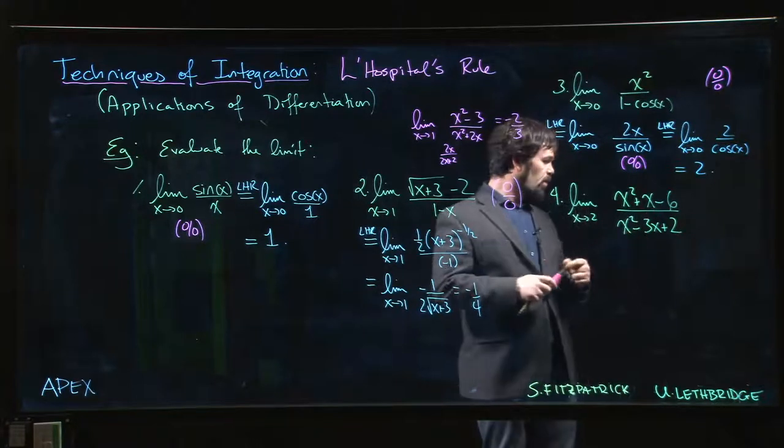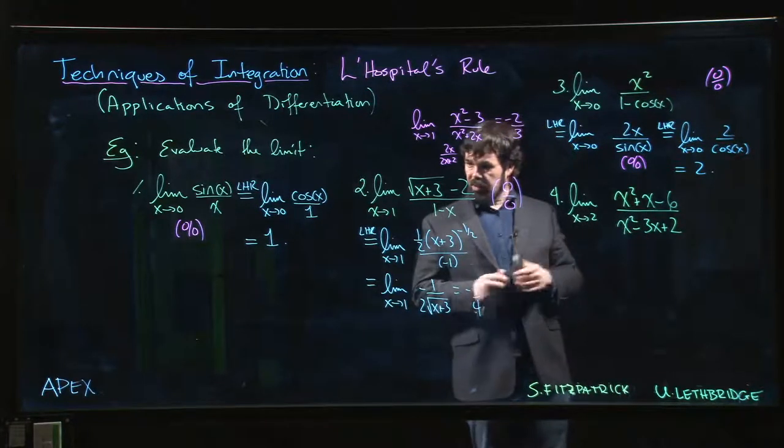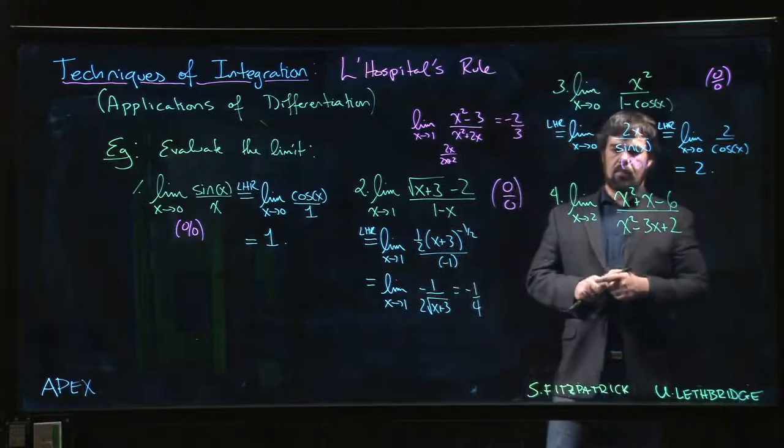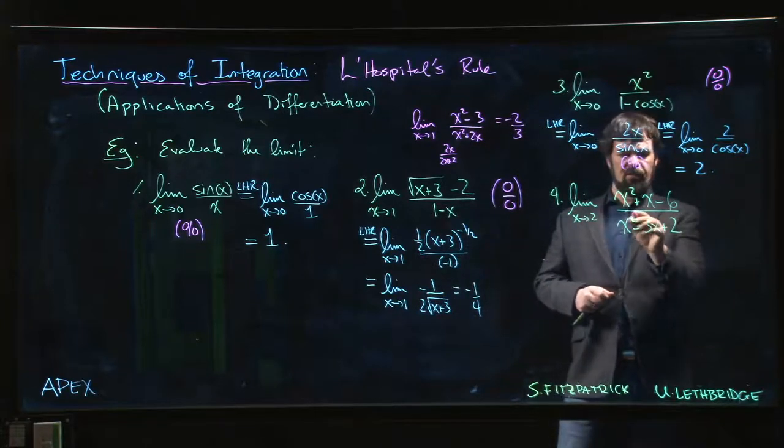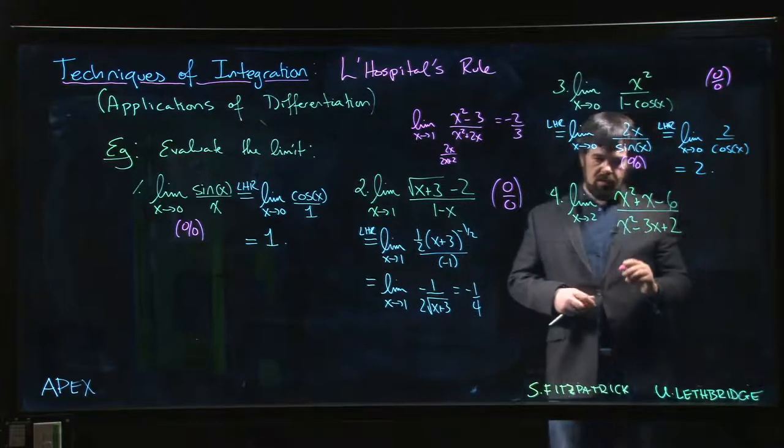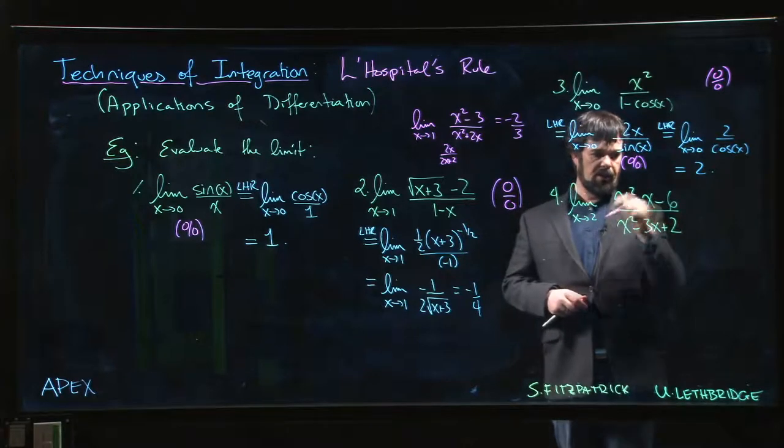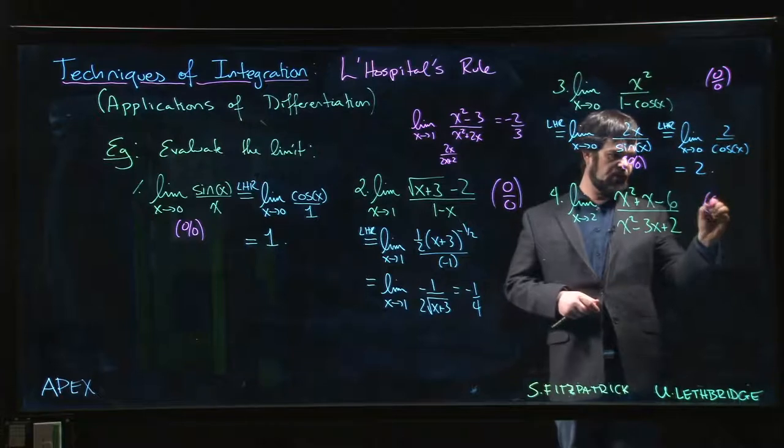Okay, one last example. We're blowing through these fairly quickly. I think we can do it all in one video. Let's check. Is it 0 over 0? Now we got to evaluate. So 4 plus 2 minus 6, yes. 4 minus 6 plus 2, yes. So it is 0 over 0.